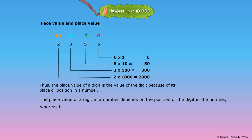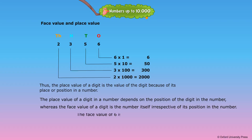Whereas, the face value of a digit is the number itself, irrespective of its position in the number. The face value of 6 is 6. The face value of 5 is 5. The face value of 3 is 3. The face value of 2 is 2.